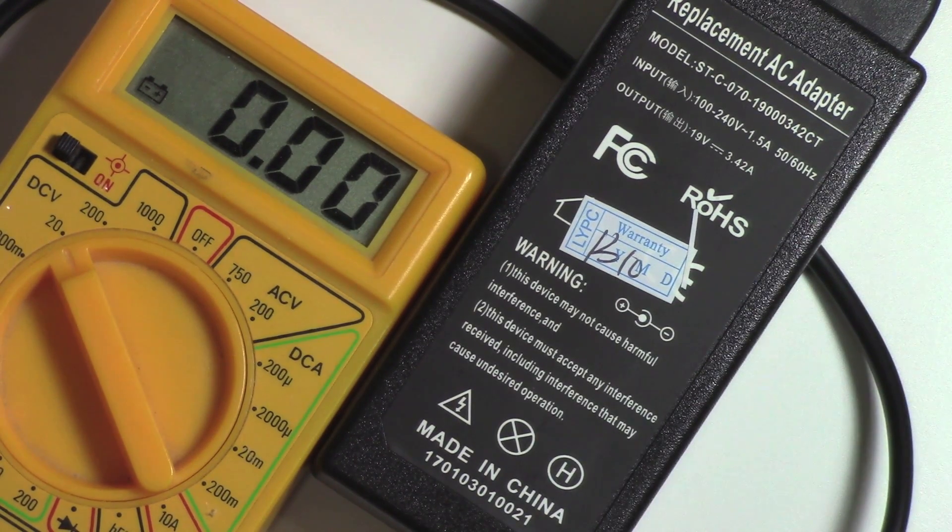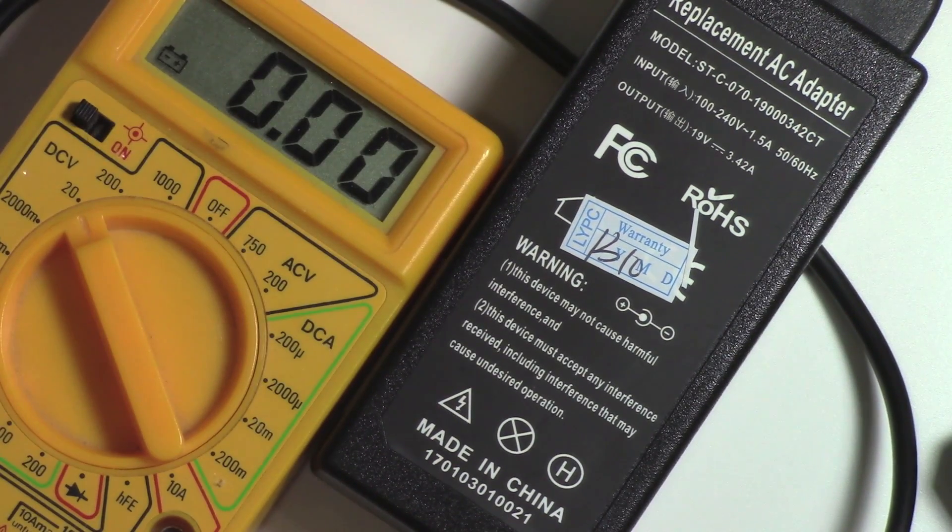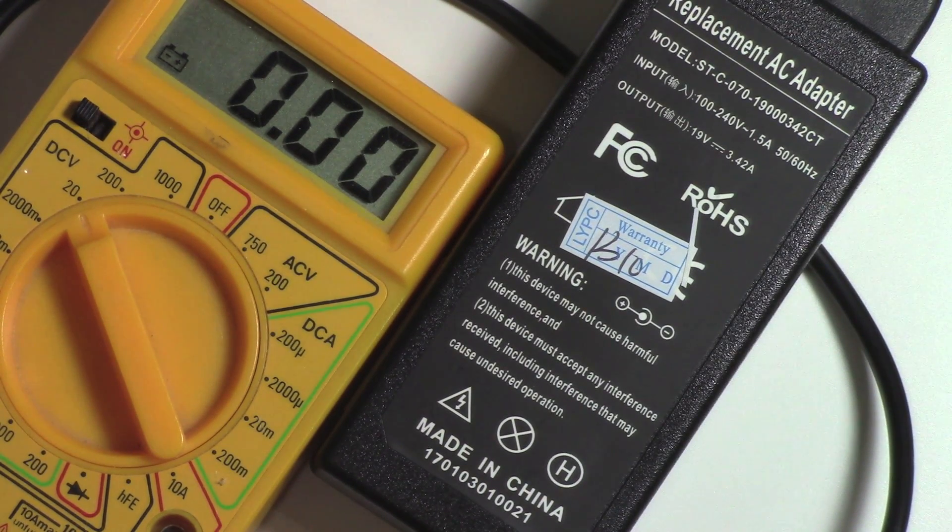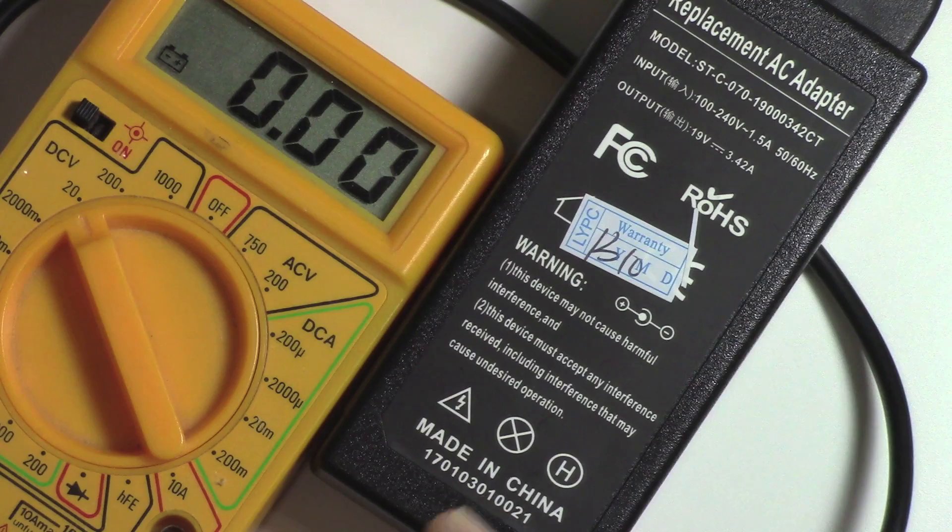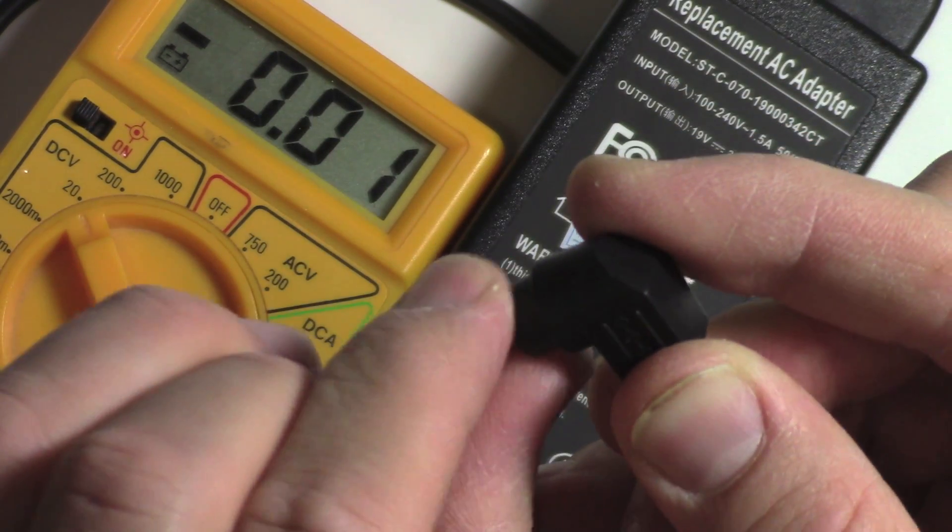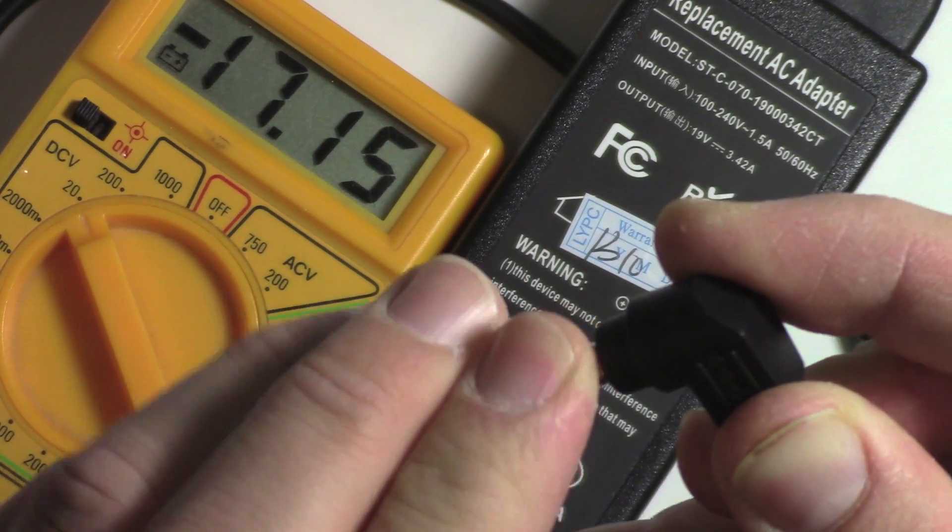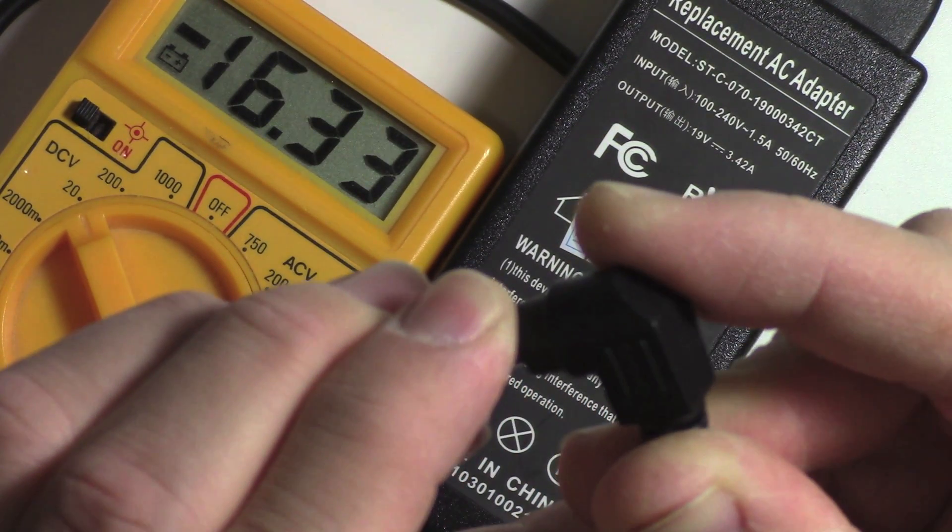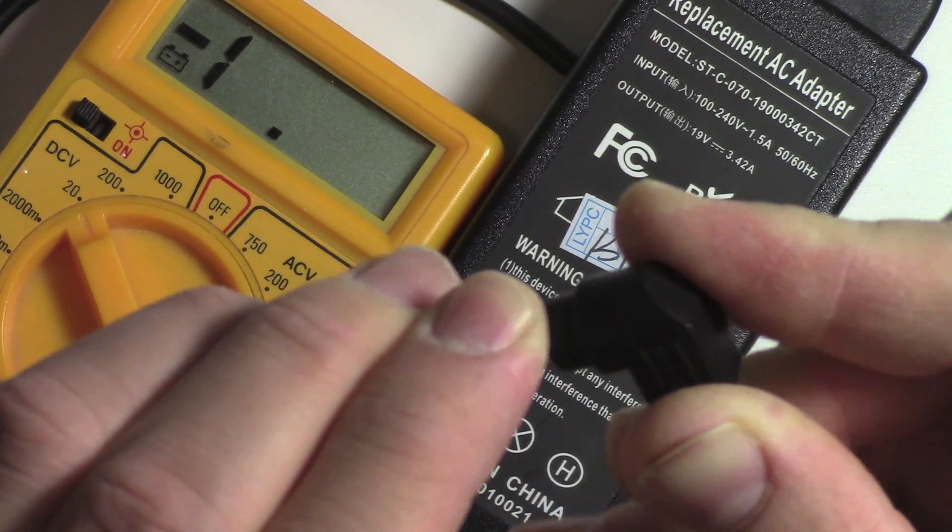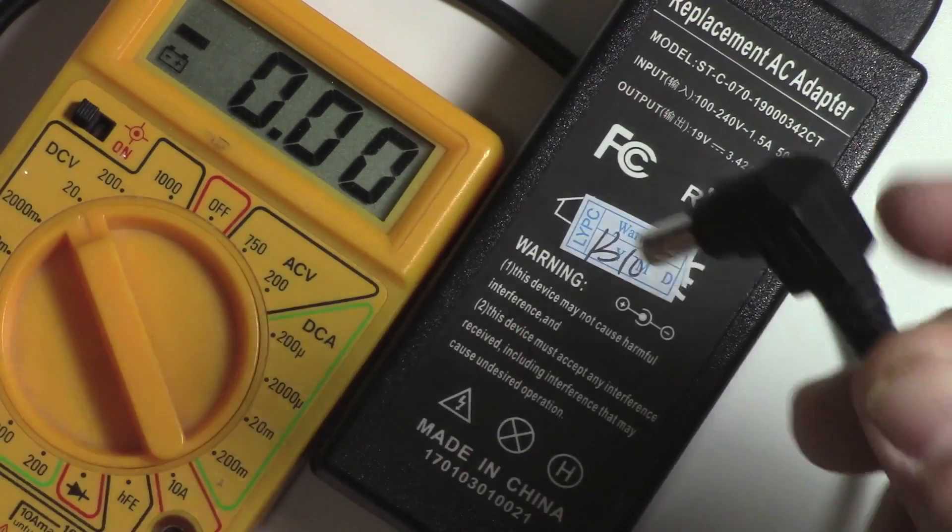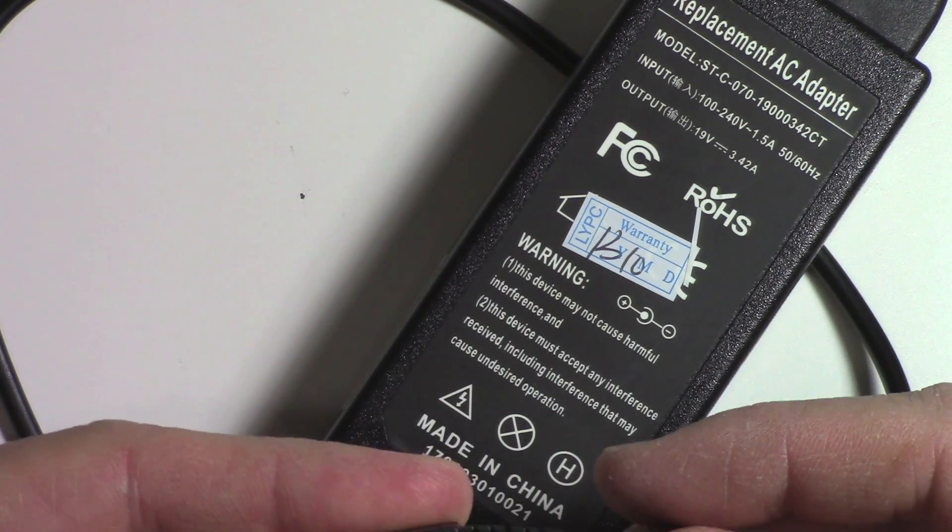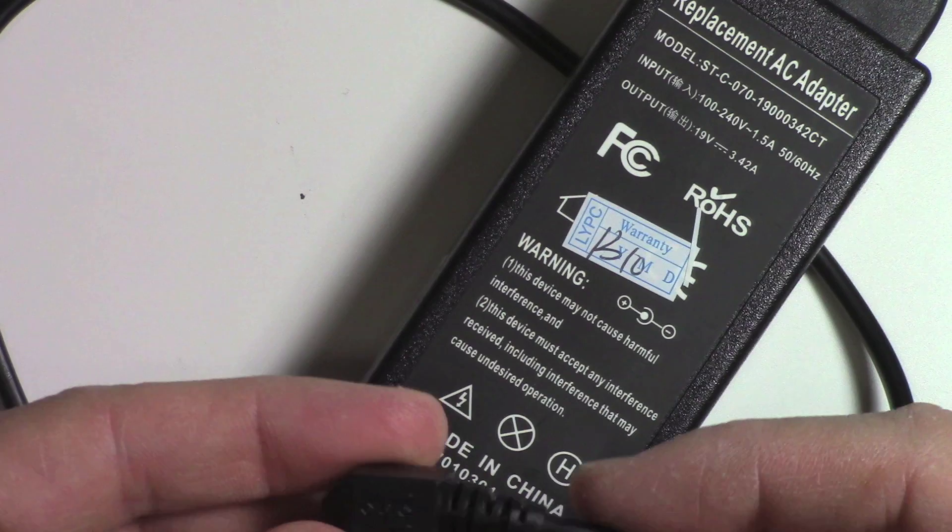Alright, this power supply is bad. It's got a break in the cord somewhere, I'm guessing around here. I'm hooking up the leads, measuring it on my voltmeter, and sometimes I read 19 volts but I can't keep it. So something's wrong with this. Well, I know what's wrong - there's a break in it somewhere.